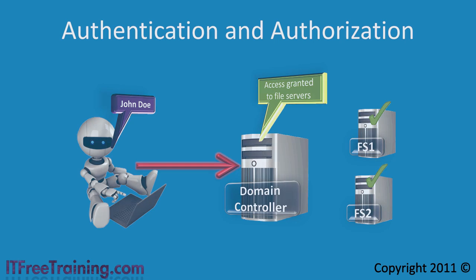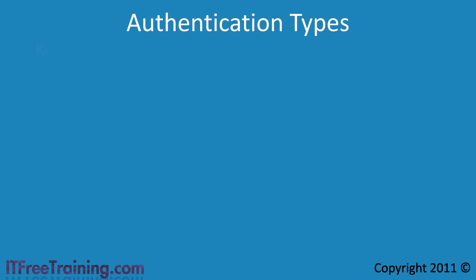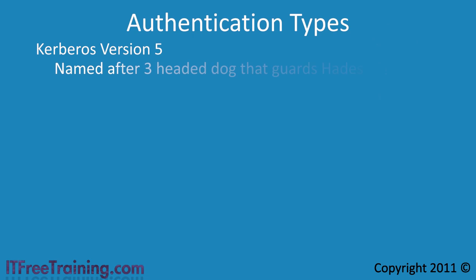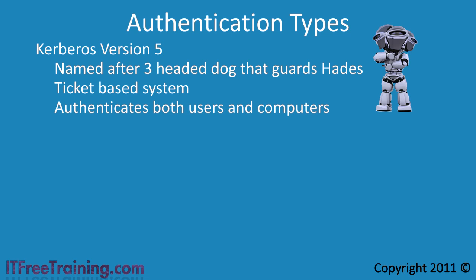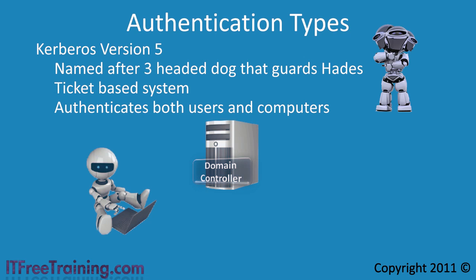Windows has a number of authentication systems that can be used to identify who you are. The first is Kerberos version 5, named after the three-headed dog guarding Hades from Greek mythology. It is a ticket-based system which can be used to authenticate both users and computers. A ticket is mathematically time-consuming to generate but can quickly be verified to be authentic once issued.